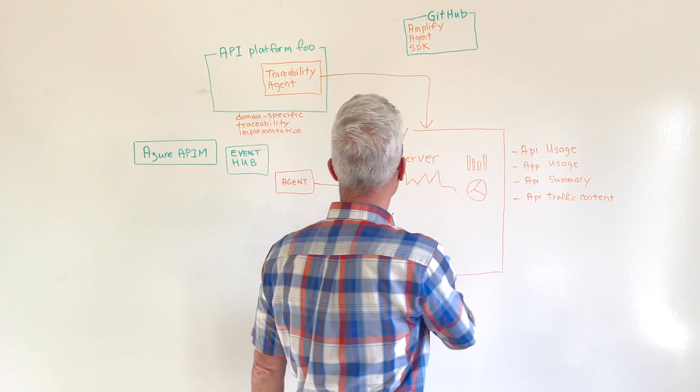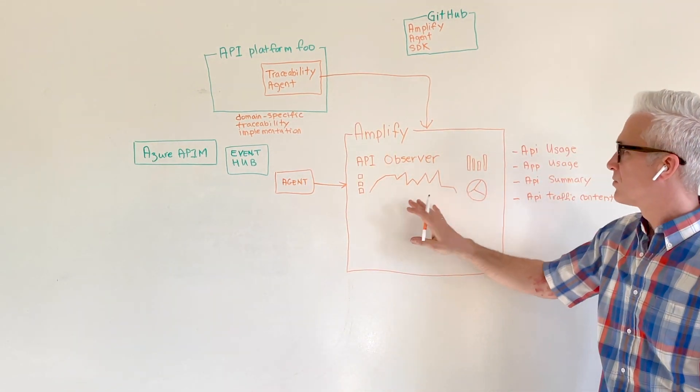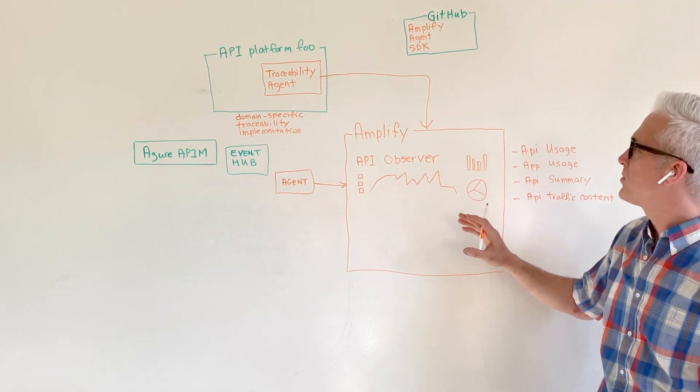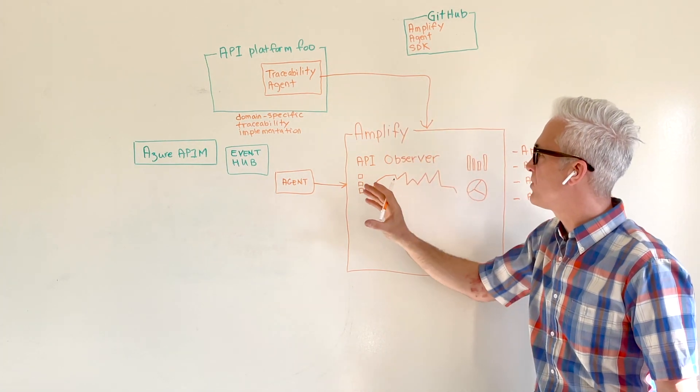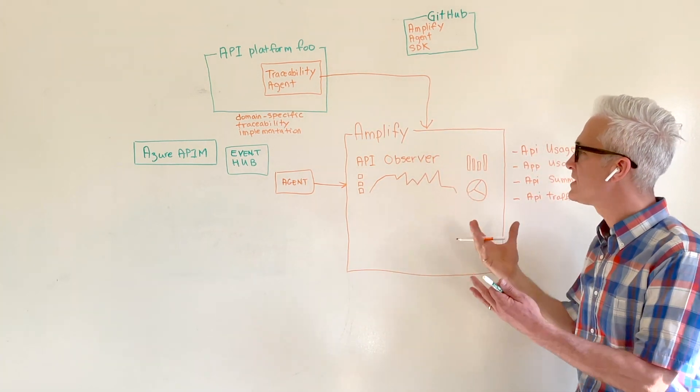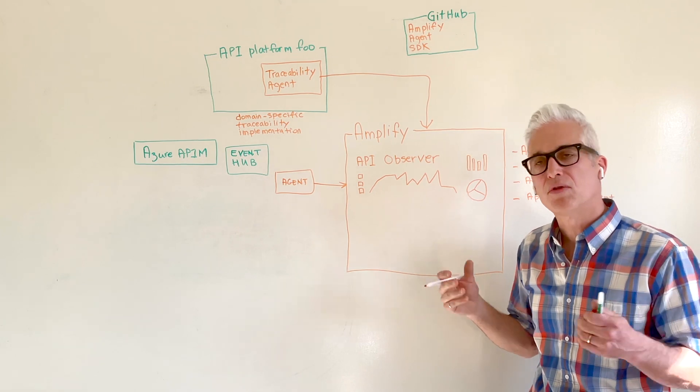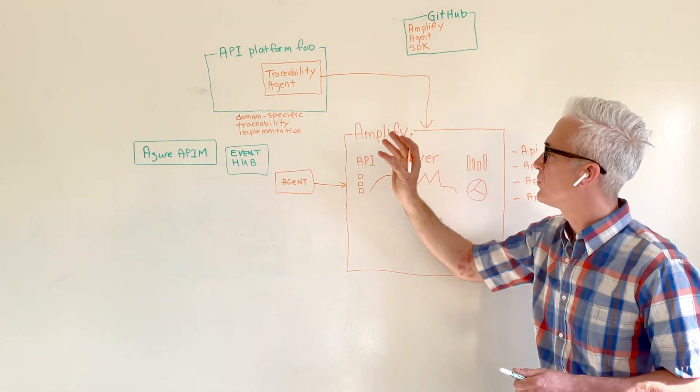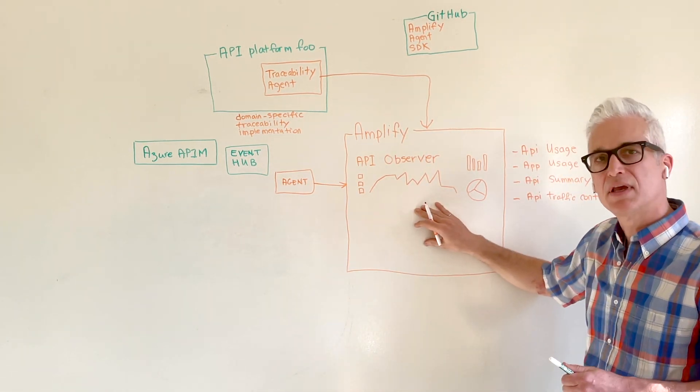So back over here on API Observer, the result is that you get API analytics populated from your different API platforms, consistent analytics. You are no longer comparing apples to oranges. Everything is peaches here.